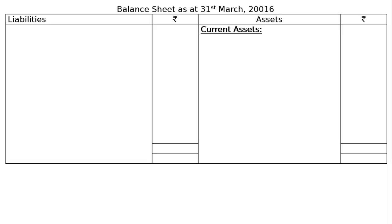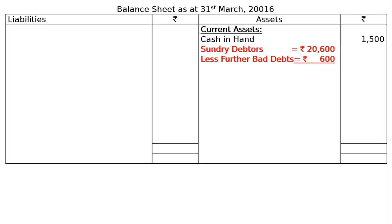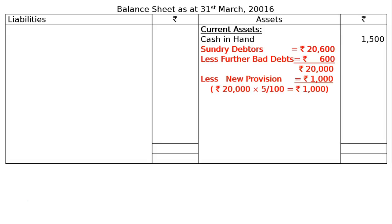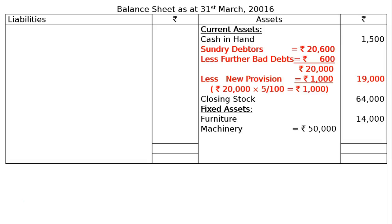Now the balance sheet as at 31st March 2016. On the asset side, current assets: cash rupees 1,500; sundry debtors rupees 20,600 less further bad debt rupees 600 equals rupees 20,000; less new provision 5 percent of rupees 20,000 equals rupees 1,000; net debtors rupees 19,000. Closing stock rupees 64,000. Fixed assets: furniture rupees 14,000; machinery rupees 50,000 less depreciation rupees 5,000 equals rupees 45,000. Total assets rupees 1 lakh 43,500.